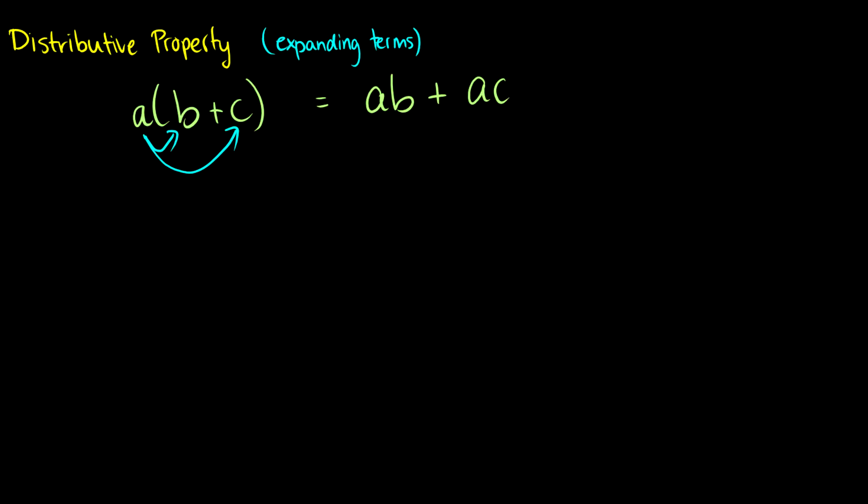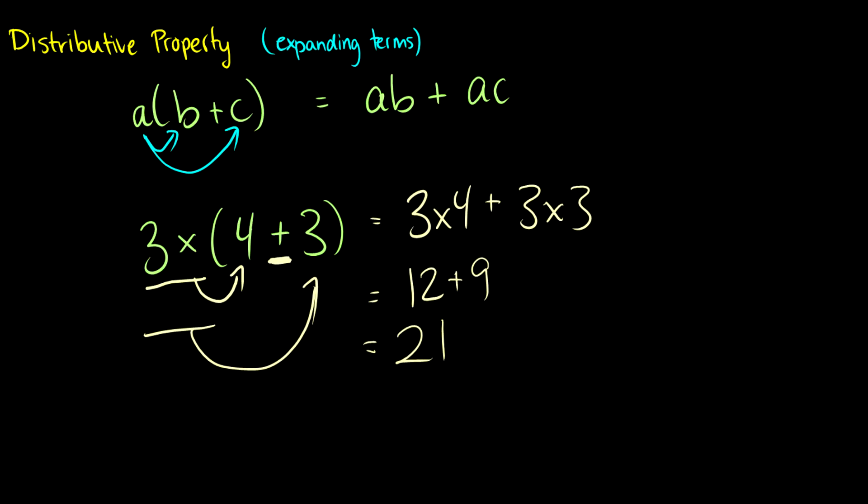So let's do a nice example here. Three times, I'm going to write out the sign here. Four plus three. So here's what we do. In this case, we take this three times, and then we send it to the four. And then we take the three times, and then we send it to the three. So what we get here is we get three times four, and then we add three times three. Because we do three times four, and then we add three times three, because we distributed the three into the brackets. So this is going to be 12 plus nine, which is 21.